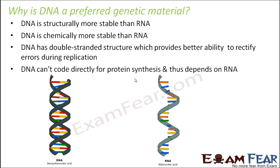Why is DNA the preferred genetic material over RNA? DNA is structurally more stable due to its double-stranded structure. Chemically, it is also more stable because it is less reactive than RNA, due to the presence of only one OH group, whereas in RNA's ribosugar there are two OH groups, making it more reactive and therefore less stable.